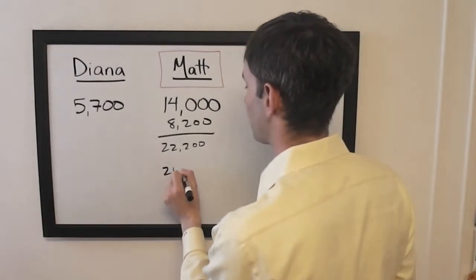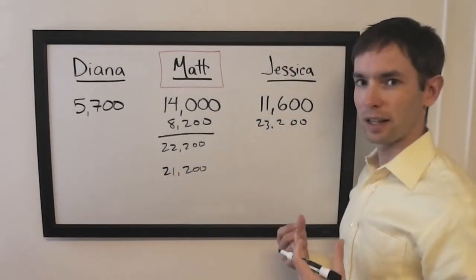If he gets it wrong with that wager, of course, he's going to be left with 21,200, which forces Jessica to get it right.